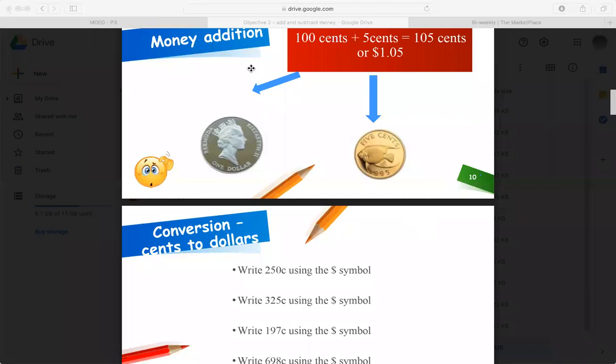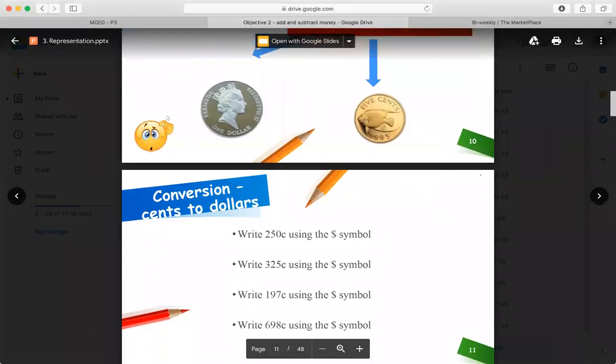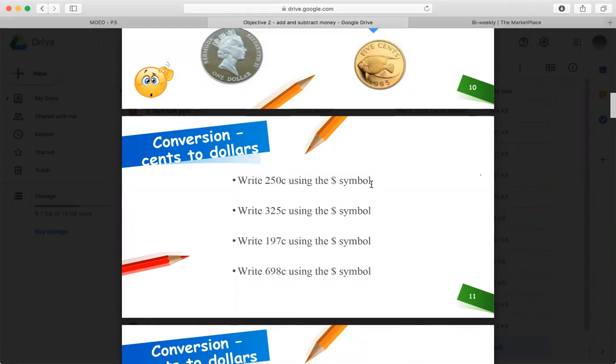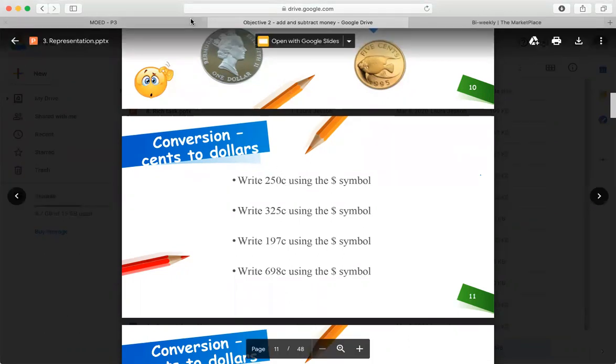All right. Now it wants us to try. How would we write $0.250 using the dollar sign? How would we write $3.25 using the dollar sign? How would we write $1.97 using the dollar sign? And how would you write $6.98 using the dollar sign? Well, we know decimal points go in.